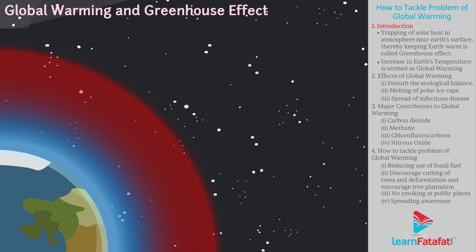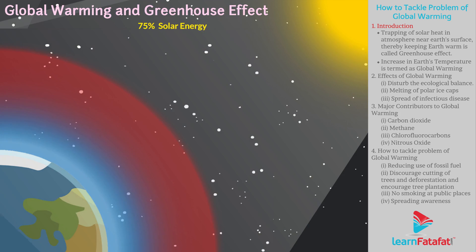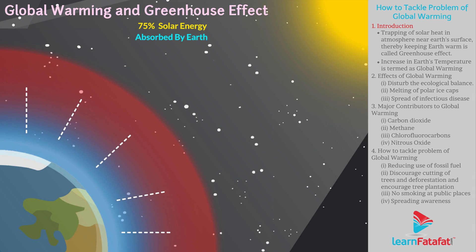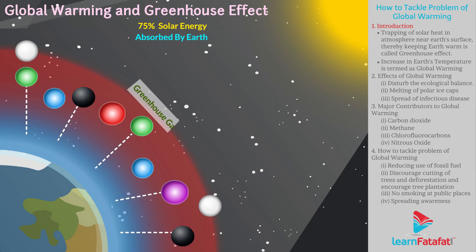Do you know that 75% of solar energy reaching the earth is absorbed by earth's surface? The remaining energy is reflected back into the atmosphere. The reflected energy is absorbed by some gases, so called greenhouse gases.